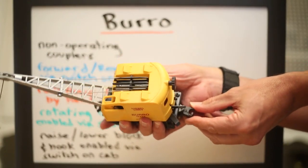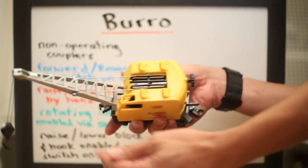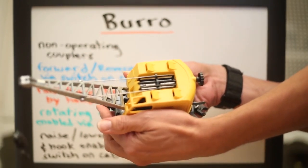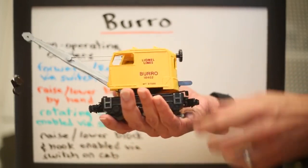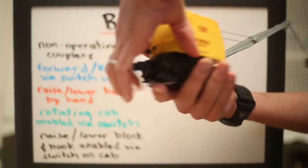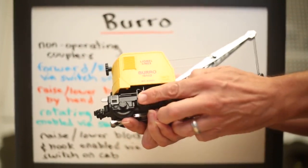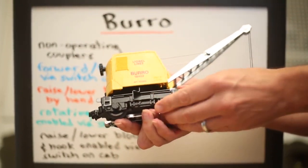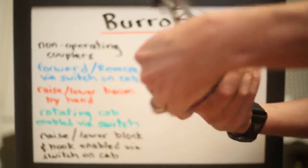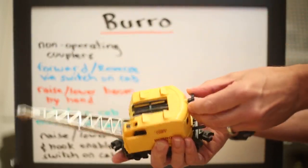There's a non-operating coupler, the other one's up front. Forward and reverse switch, it's right here on the side. Raise and lower the boom by hand.